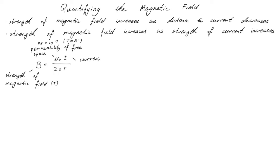I is the strength of the current measured in amps, and R is the perpendicular distance from the current measured in meters.